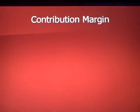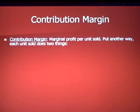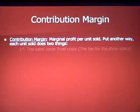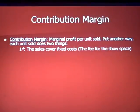That brings us to a new term: contribution margin. You'll find the definition in many places — marginal profit per unit sold. Put another way, each unit you sell does two things. First, the sale of each piece of software covers your fixed cost — in this case, the fee for the show space.